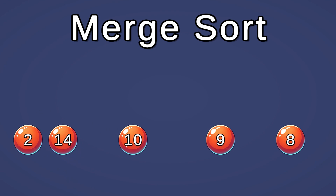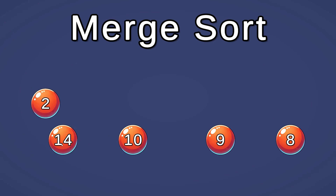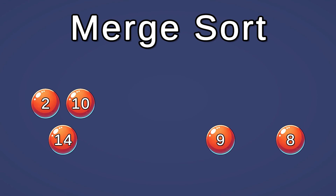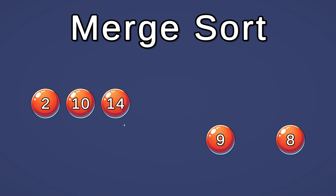Now we have two arrays that we're merging together. We look at the first position of each array. 2 is smaller than 10, so we place it first. Then we go to the next position, which is 14. 10 is smaller than 14, so it goes next. And now we have 14 left and we place it last.